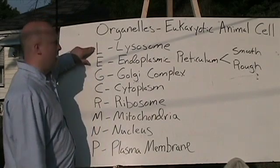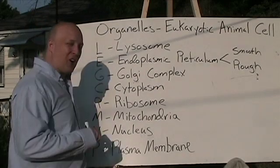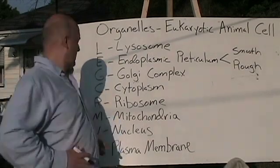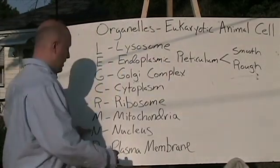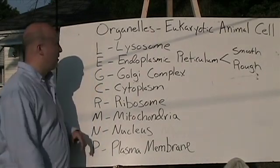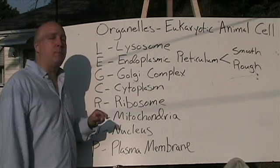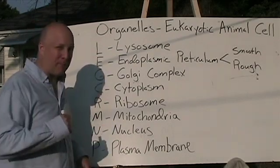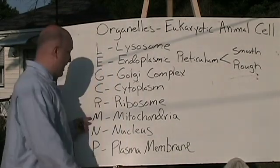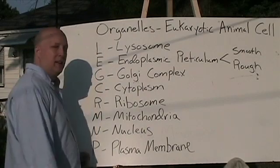Let's go through it again. L — Lysosome. E — Endoplasmic reticulum. G — Go-go Golgi complex. C — Cytoplasm. R — Ribosome. M — Mighty Mitochondria. N — Nucleus. P — Plasma membrane. One more time: L — Lysosome. E — Endoplasmic reticulum. G — Go-go Golgi complex. C — Cytoplasm. R — Ribosome. M — Mighty Mitochondria. N — Nucleus. P — Plasma membrane.